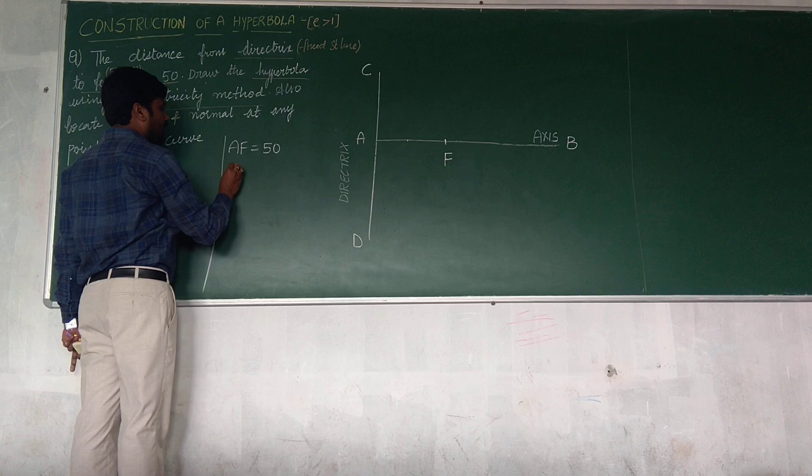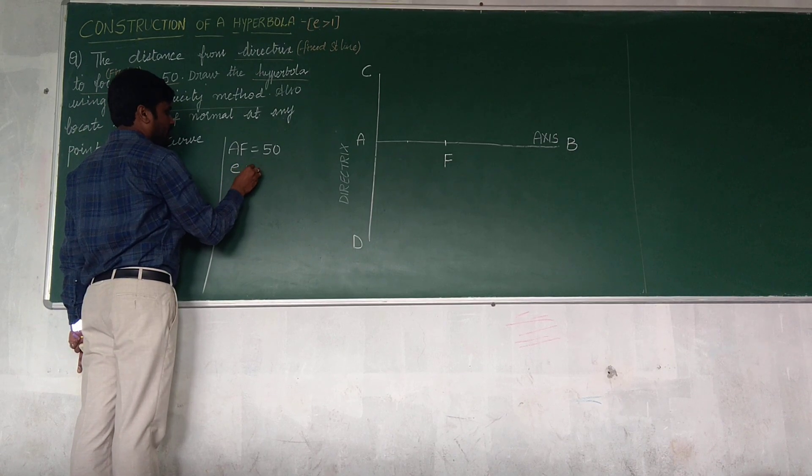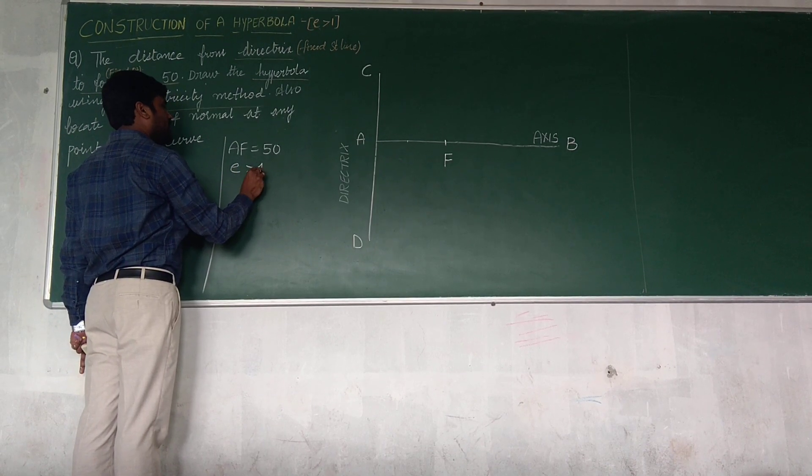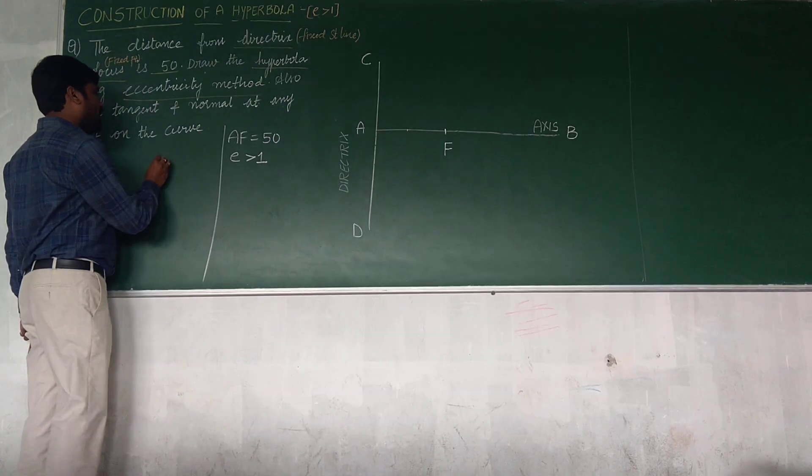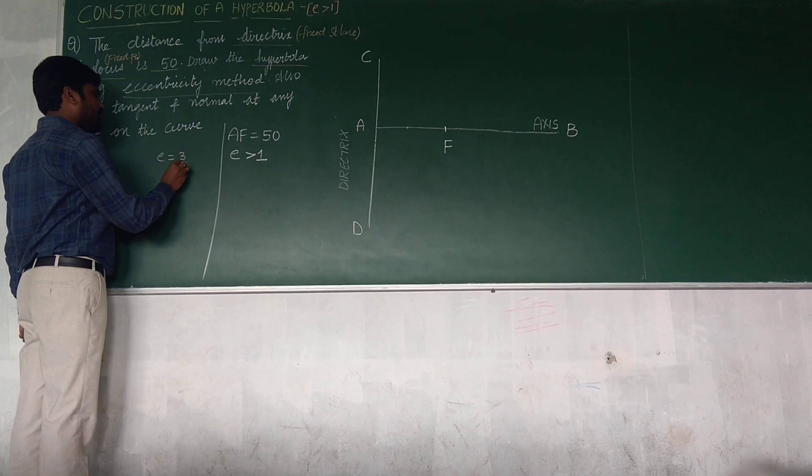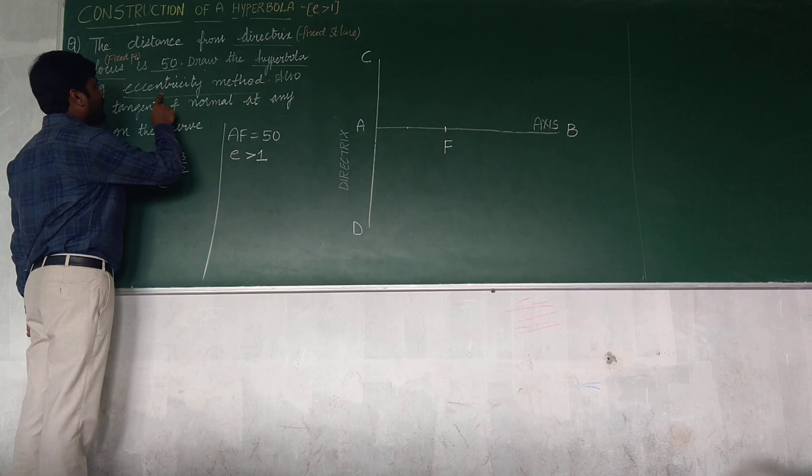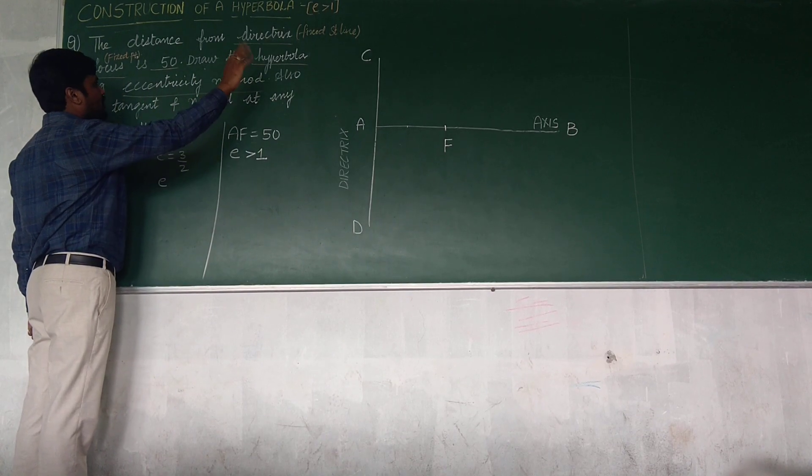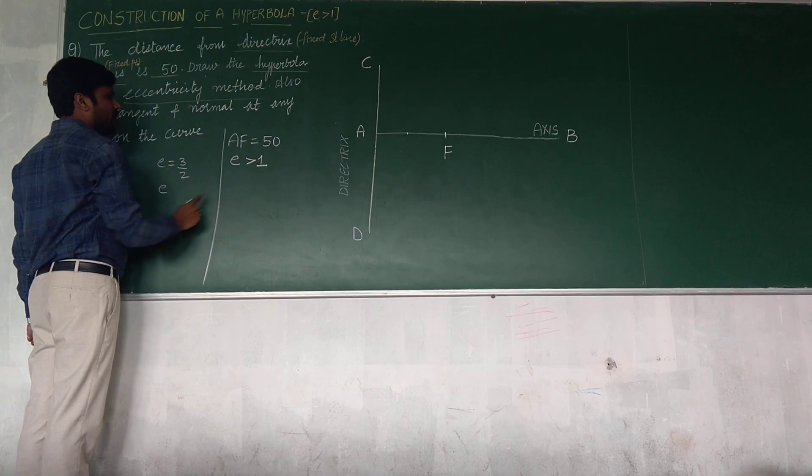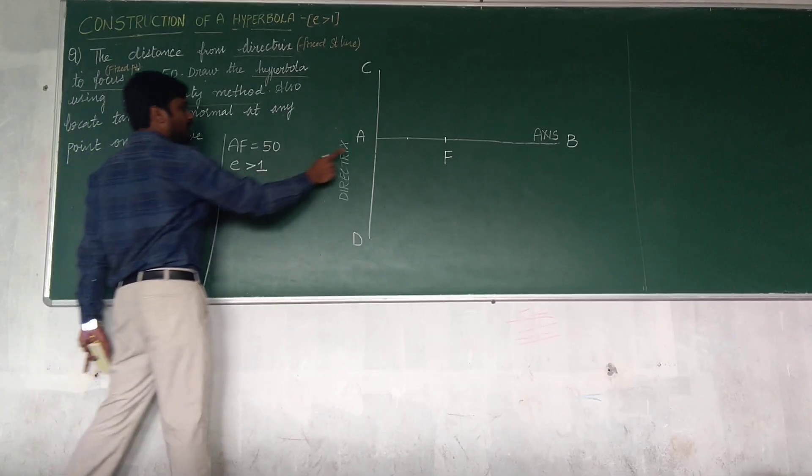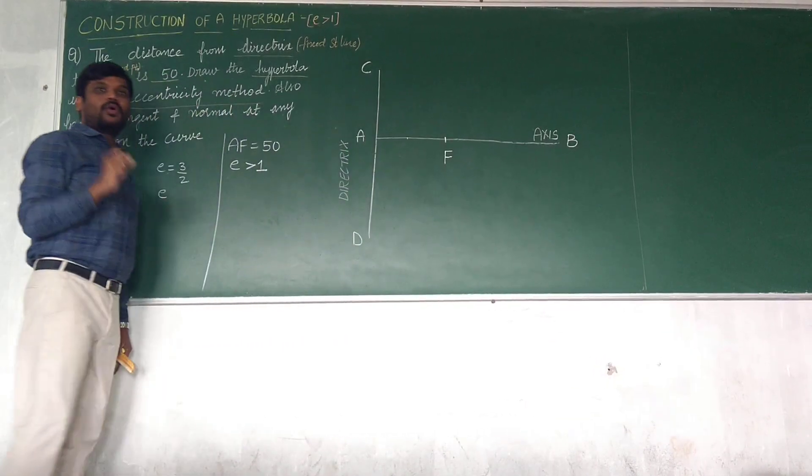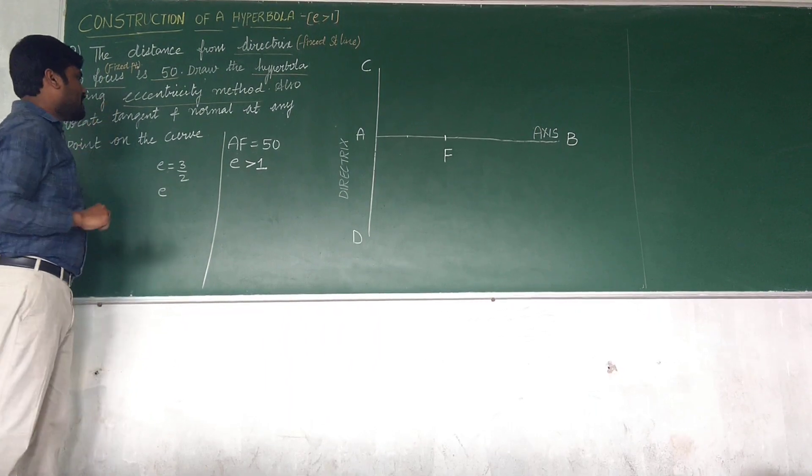But a point is called as a vertex. Now how to locate the vertex? By the term e, eccentricity. Eccentricity is greater than 1. In the problem they will be giving e is 3 by 2, or just they may not give e. At what point I need to locate the vertex is the question.